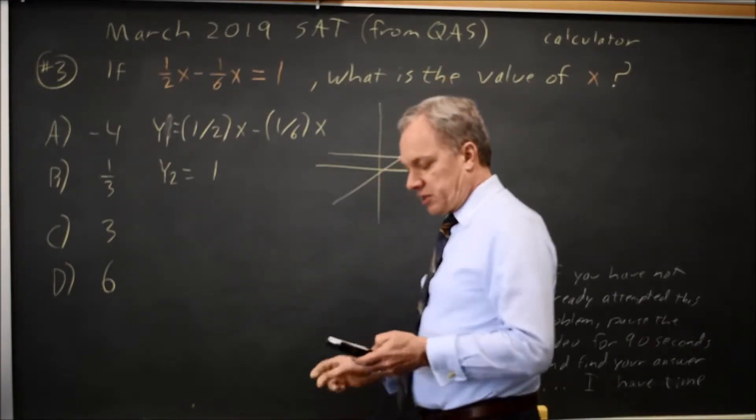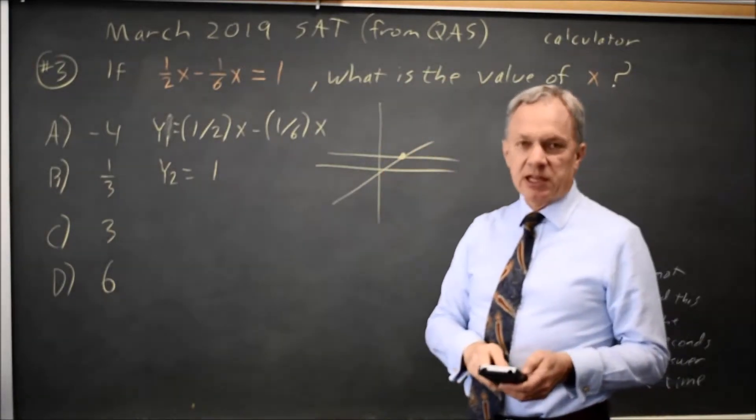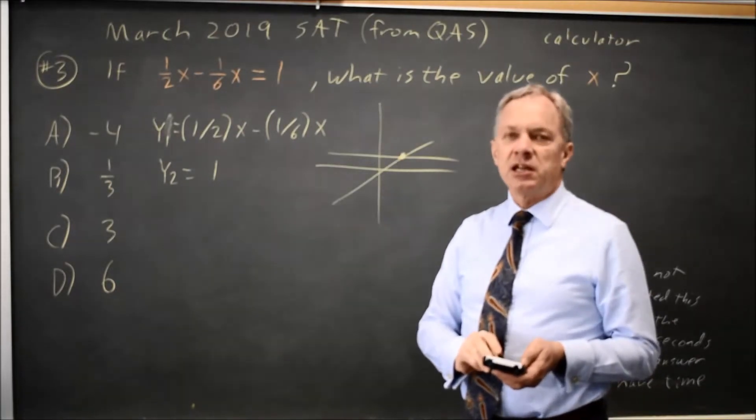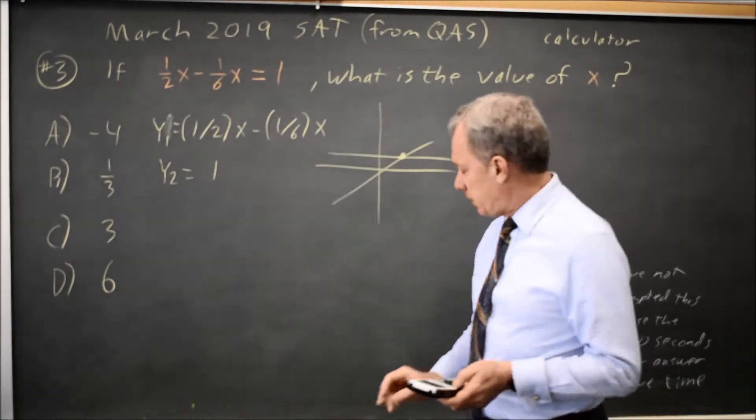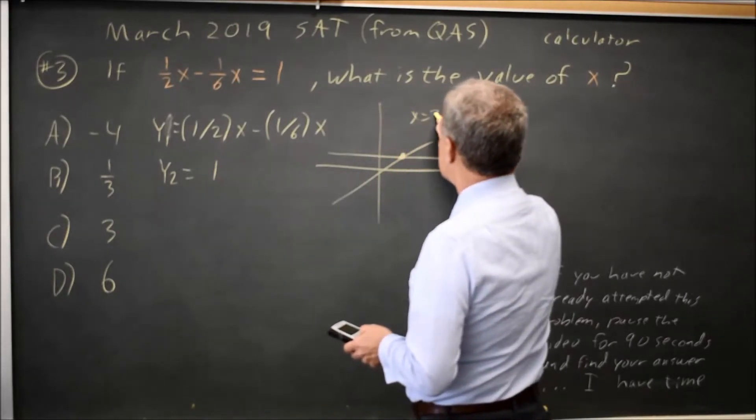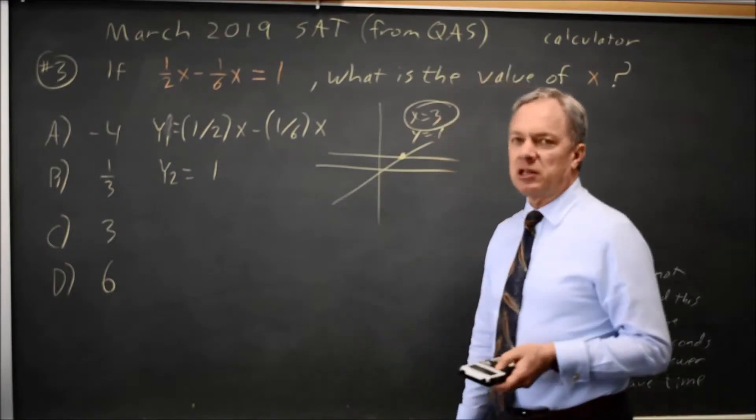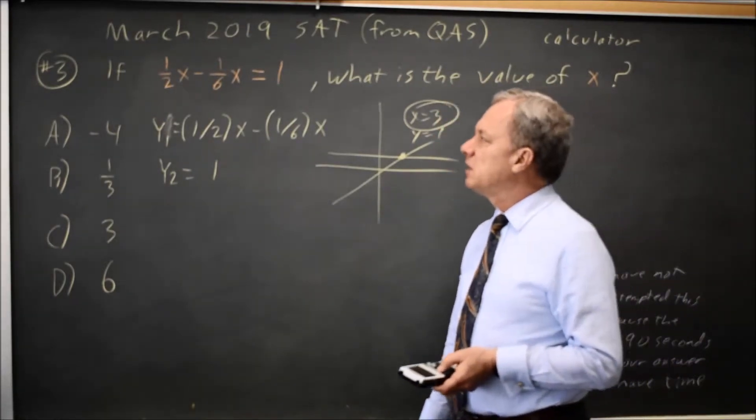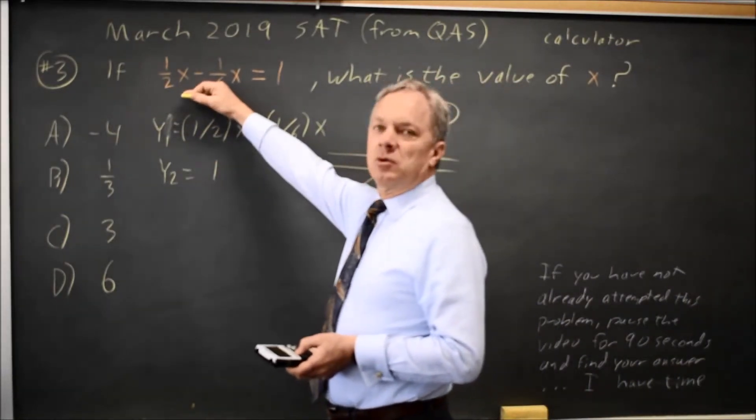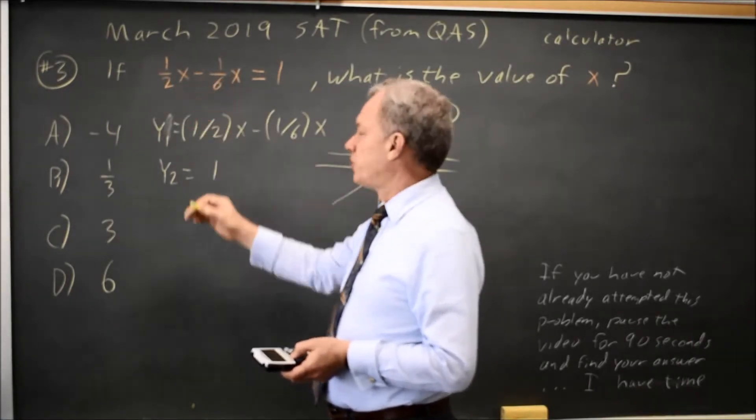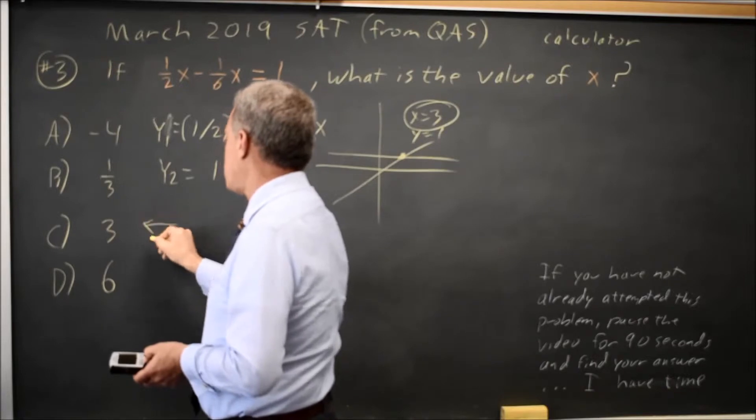Find the point of intersection. Second trace on the TI-83 or 84. Choice 5 is intersect. Hit enter 3 times. And it says x equals 3, y equals 1. The x coordinate at the point of intersection is the variable when you solve for the equation that only has one variable. So the correct answer is x equals 3.